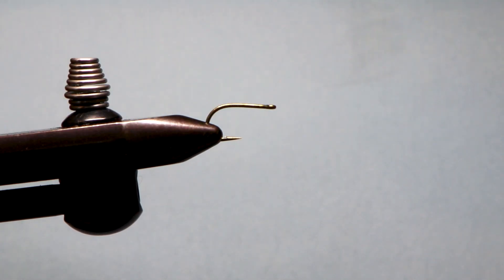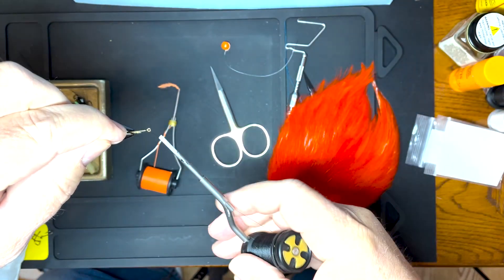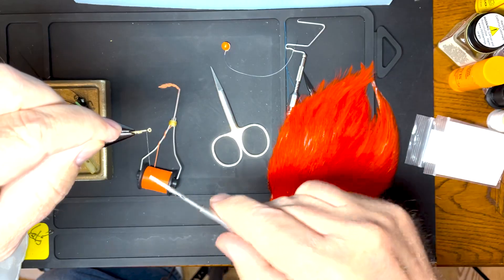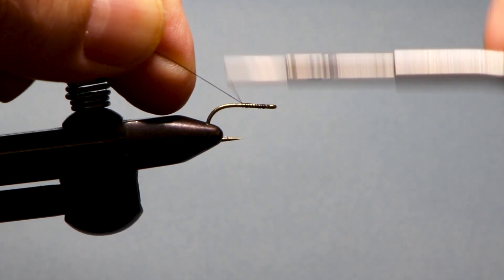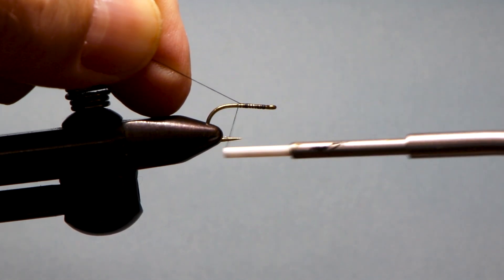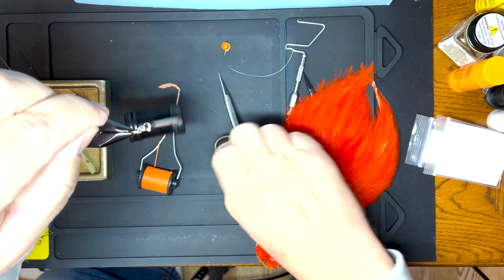This is a wide gap scud hook so we're just going to run the thread onto the hook and get a layer of thread all the way back. Trim that.